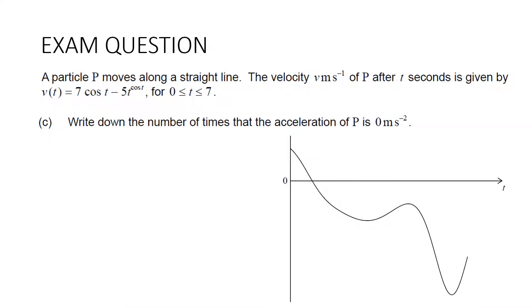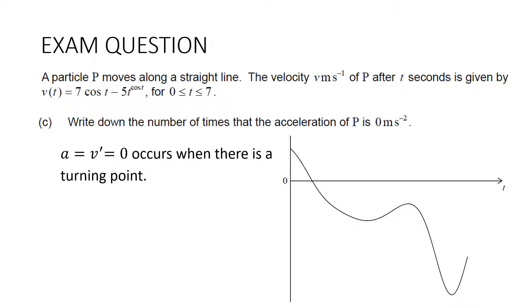Write down the number of times the acceleration of P is 0 meters per second squared. Acceleration is the derivative of velocity, so acceleration equals zero at turning points of the velocity curve. Count the turning points on the graph: one, two, three. So acceleration equals zero three times.